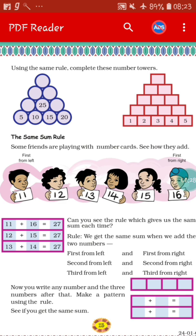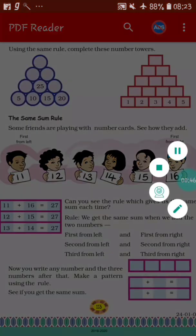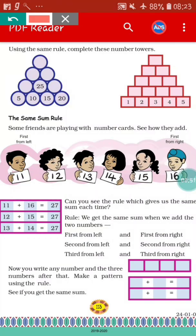Here you can see some friends are playing with number cards. See how they add. Students are taking number cards: 11, 12, 13, 14, 15, and 16. They have added the numbers. At first they took the number at the extreme left, that is 11, and added the first number from the extreme right, that is 16. So 11 plus 16 comes 27.